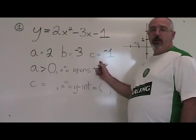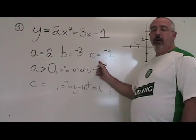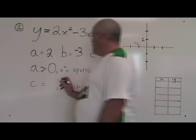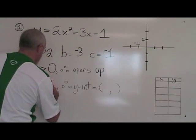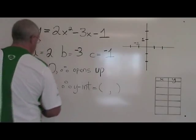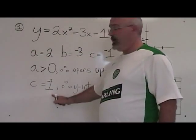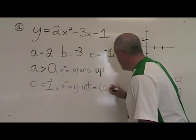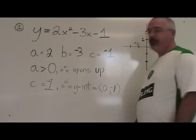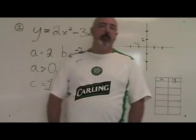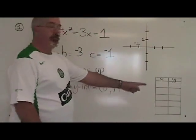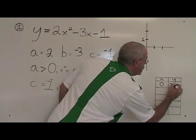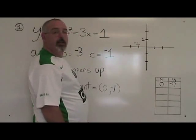c equals negative 1. This is all we need to know what our y-intercept is going to be. If c equals negative 1, our y-intercept is (0, negative 1). Let's put that y-intercept into the table of values — this is our first point: (0, negative 1).